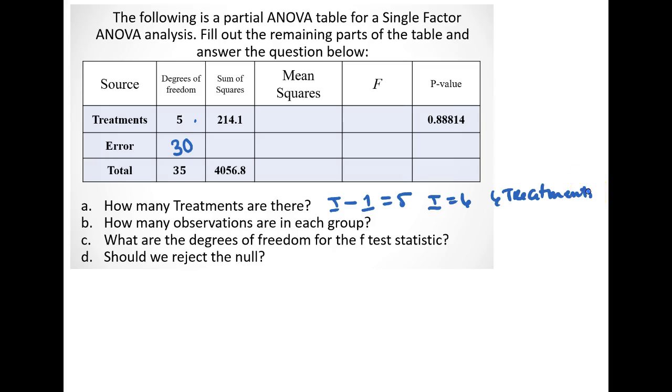And then we want to know how many observations are in each group. Well we know that I times J minus 1 is equal to 30, the error degrees of freedom. So if I is equal to 6, this implies that this is equal to 6 times J minus 1, which would imply that this must be equal to 5.